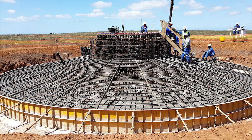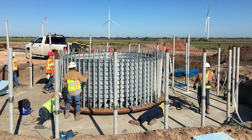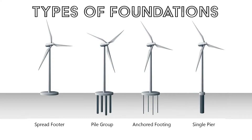Foundations are critical to the success of a wind turbine project. They support the wind turbine structure, and the foundation types vary based on subsurface soil and rock conditions and the size of the wind turbines. The most common types of wind turbine foundations are: spreader foot, pile group, anchored footing, and single pier.